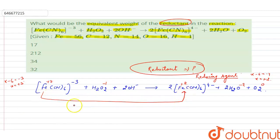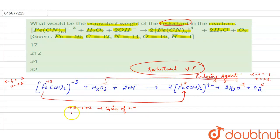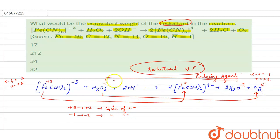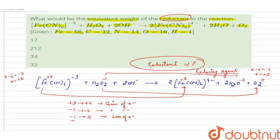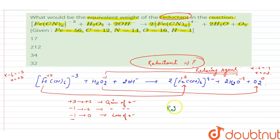Among all species, we look for where loss of electrons is taking place. Iron changes from +3 to +2 — that is a gain of electrons. Oxygen in H₂O₂ changes from −1 to −2 — also a gain of electrons. However, in H₂O₂ → O₂, the oxidation state changes from −1 to 0, so one electron is lost. Therefore, the reductant is H₂O₂.